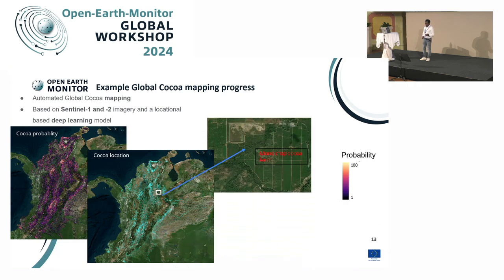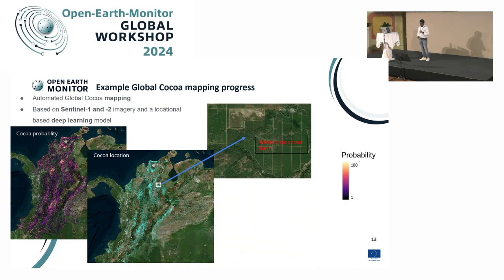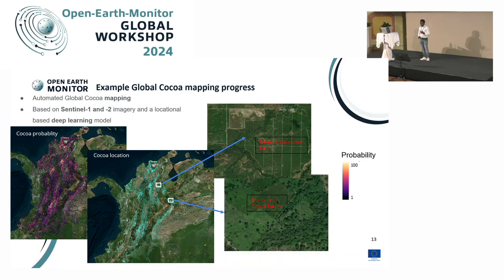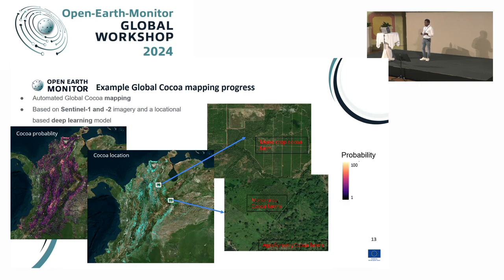This is another example — this is part of Colombia, in the northern part. You can see this is a plantation for a cocoa farm, and it's a big one, probably more commercial. There is also a cocoa monocrop area alongside an agroforestry farm. Together with this, we're also producing probability maps — where we have more confidence, and where the model is struggling to make a decision. It might be a cocoa farm as a challenge, especially for the agroforestry systems.